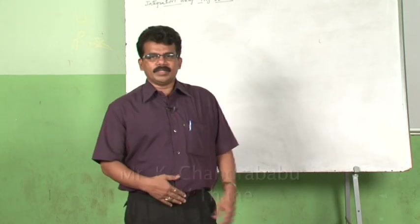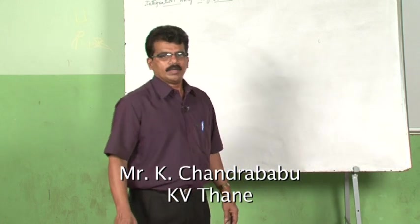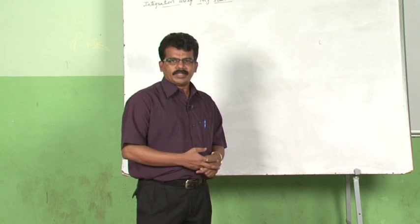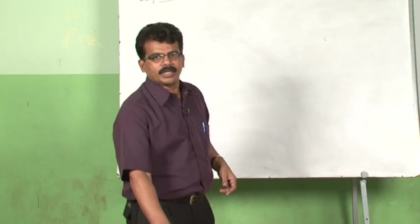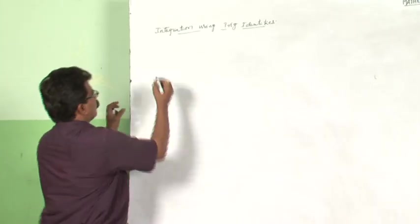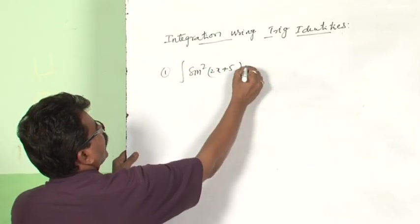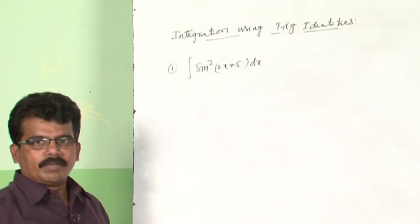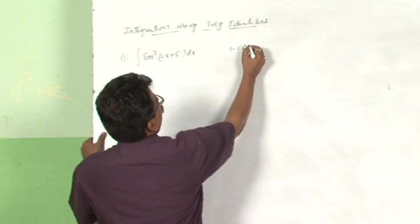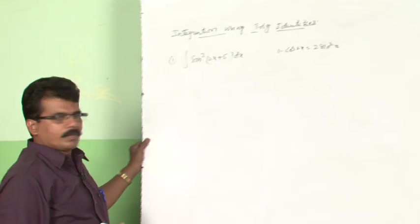We will be discussing integration of functions using trigonometric identities. Just recall the identities studied in class 11, like sin2θ, cos2θ, sin3θ, cos3θ, 1+cosθ, and so on. There are some examples. Question number 1: integral of sin²(2x+5) dx. The integrand is in the form of sin²x. There is a formula: 1 − cos2x = 2sin²x, so we can use this formula to integrate this function.